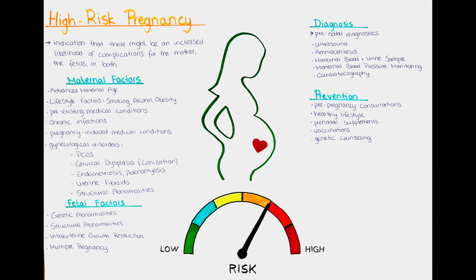How can we diagnose a high-risk pregnancy? Diagnosis of a high-risk pregnancy typically involves a thorough assessment of the maternal and fetal health. It includes various diagnostic tools of the prenatal diagnostics, which help us to identify a potential risk for the mother or the baby. The first step is usually an ultrasound, as it is a non-invasive and easy-to-perform test. It helps us to evaluate the fetal growth, its anatomy, and the structure and function of the placenta.